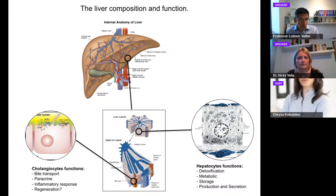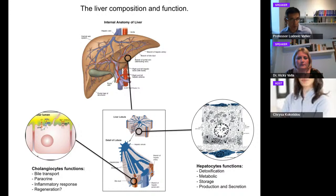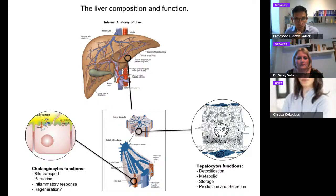The other key cell type in the liver is the cholangiocyte. Cholangiocytes line the biliary tree, which is a network of conduits in the liver that drain it of all the toxins and waste produced by hepatocytes — especially bile acids. Cholangiocytes are also very important, but today I will focus on hepatocytes. Cholangiocytes will be discussed in more detail by Photis Sampaziotis, a clinician working in my lab, who has been invited for one of the next sessions.